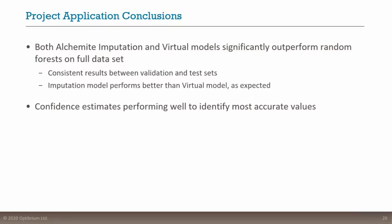Conclusions from the project application: Alchemite imputation and virtual models both significantly outperform random forests. We're getting consistent results — internal validation showed the same pattern. The imputation model performs better than the virtual model as expected, having slightly more information, but virtual predictions already outperform random forest. Confidence estimates are performing well, and we can focus on the most accurate values.